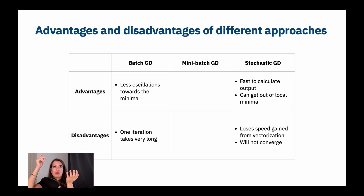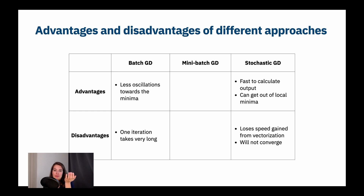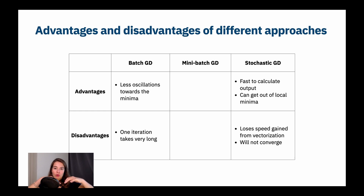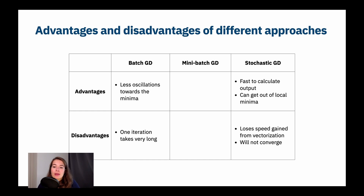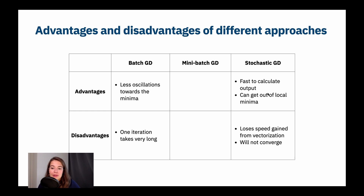Even if stochastic gradient descent gets stuck at a local minimum — a place that is not the absolute minimum cost but appears as a dip in the curve — it might still escape because it oscillates so much. But the problem is it will not converge, so being able to escape a local minimum doesn't actually help if convergence never happens.